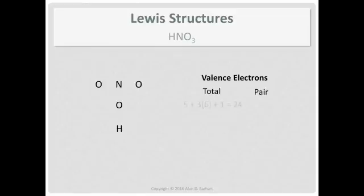For the valence count, nitrogen is column 5a, oxygen is column 6a - there are three of them - and then we have hydrogen. There's a total of 24. Divide that by 2 and we get 12 pair.